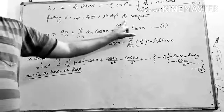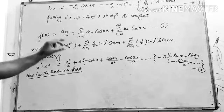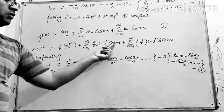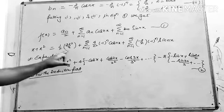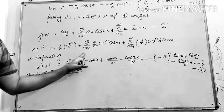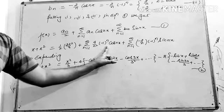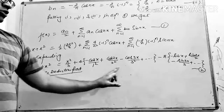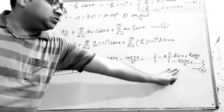Putting results 1, 2, and 3 into equation 1, and replacing f(x) with x + x²: a₀ = 2π²/3, so the a₀/2 term gives π²/3. Expanding the summation, we get: f(x) = π²/3 + 4(−cos x/1² + cos 2x/2² − cos 3x/3² + …) + 2(−sin x + sin 2x/2 − sin 3x/3 + …). Let this be equation 2. This is the complete Fourier expansion.